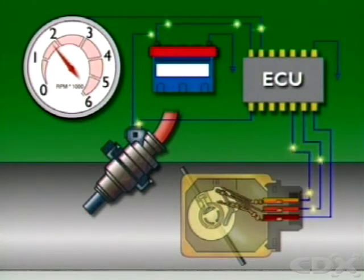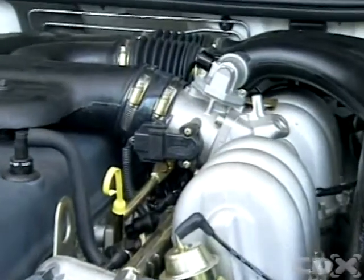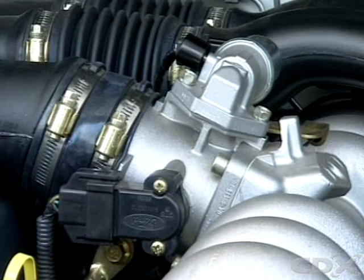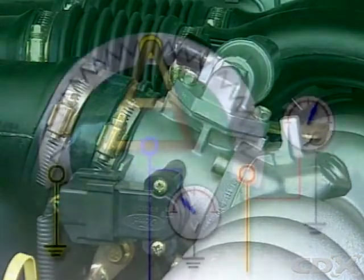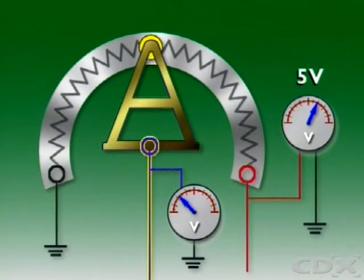Injection then recommences to maintain drivability. A potentiometer type sensor monitors throttle position over its full range. One end has a 5V reference voltage from the control unit. The other is connected to control unit earth. A third wire runs from a sliding contact in the throttle position sensor to the input circuits of the control unit.